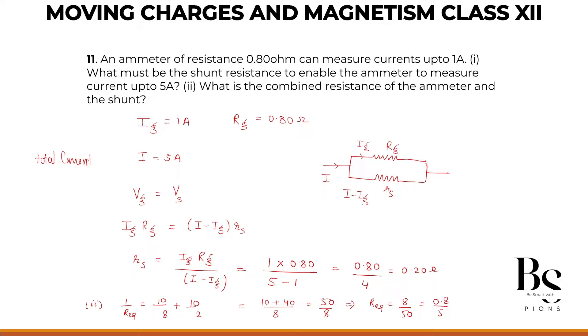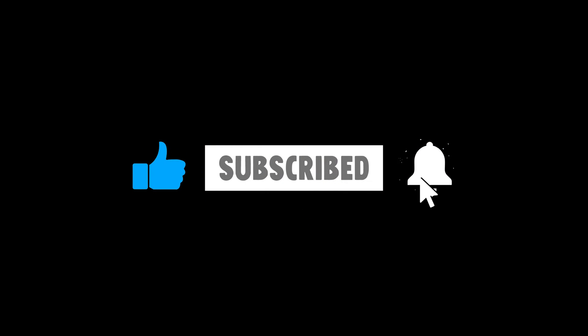So 0.8 divided by 5, which is 0.16 ohms. Done, this is our equivalent resistance. I hope this is clear. Watch the complete playlist on the app Pions. Download the app now.